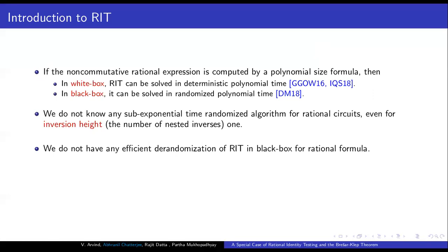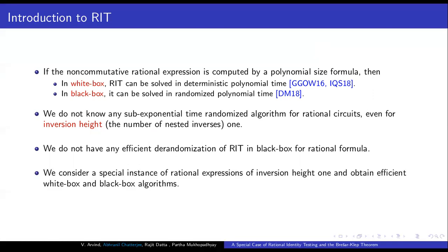In the black box setting, even when the input is given as a rational formula, we do not have any deterministic sub-exponential time algorithm. What we do in this work is consider a special case of rational expressions of inversion height 1, and we show that we can obtain efficient white box and black box algorithms.